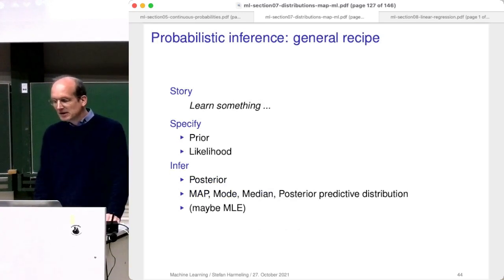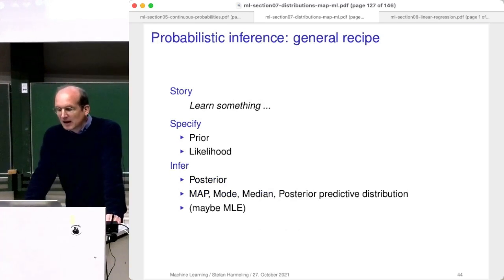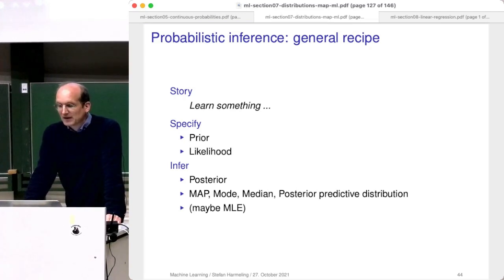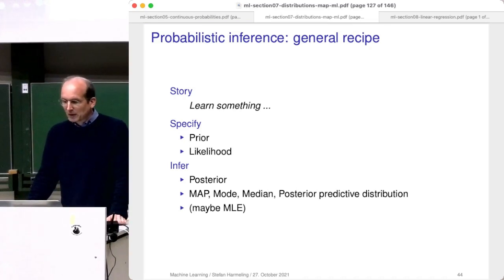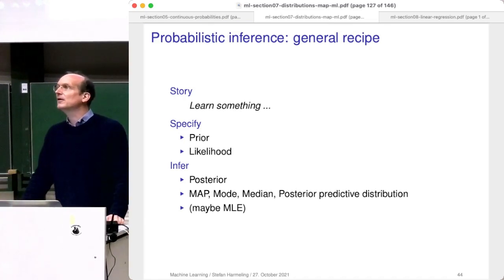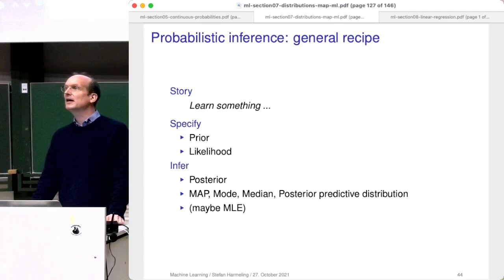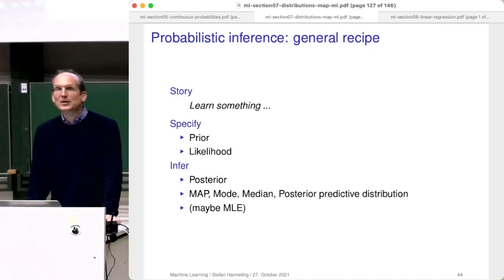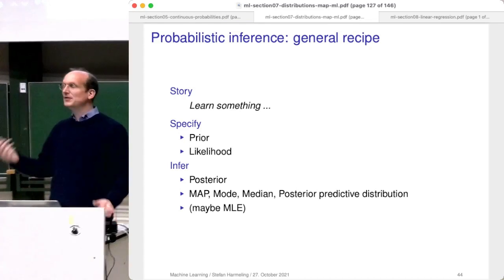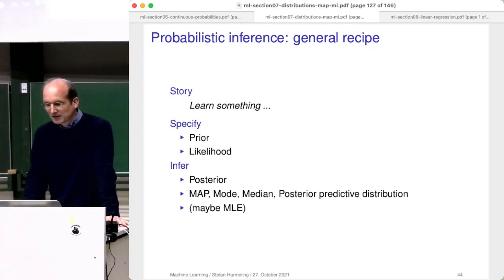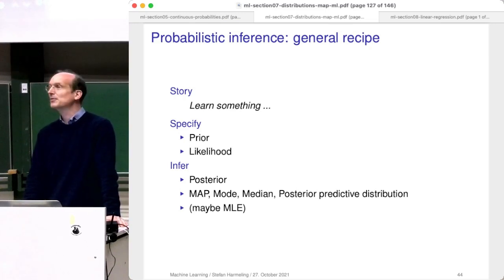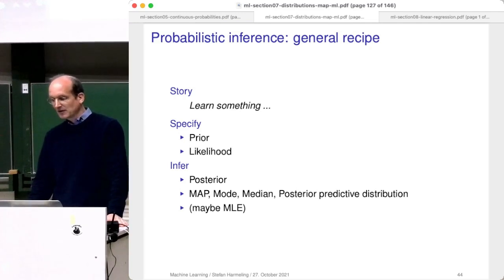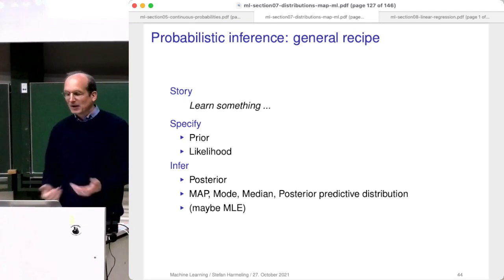The general recipe of probabilistic inference — let's call it that since it's a generalization of Bayesian inference. We have a story where we have unknowns and stuff we want to find out. We specify the prior and the likelihood, defining our model, then we turn the Bayesian crank and get the posterior. From the posterior we can do many different things, possibly also just doing maximum likelihood estimation, but in principle this is a good setup for inference.